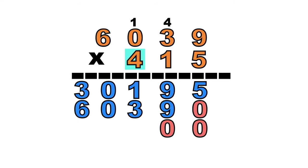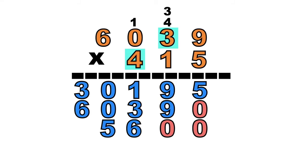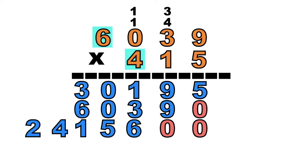So let's have 4 times 9 equals — it's 36. So we're going to write 6 at the bottom, then carry 3. Let's have 4 times 3 equals 12 plus 3 equals 15. So let's write 5 at the bottom, then carry 1. 4 times 0 equals 0 plus 1 equals 1. How about 4 times 6 equals — it's 24.